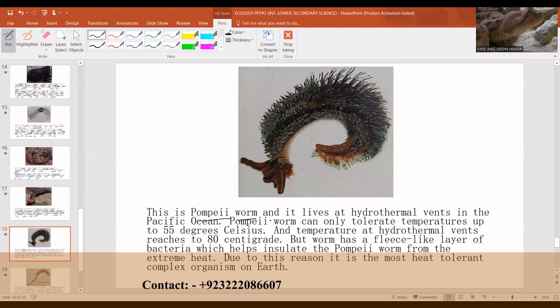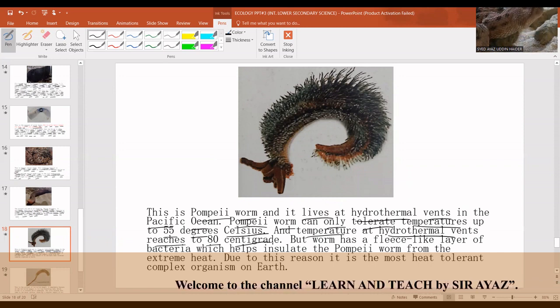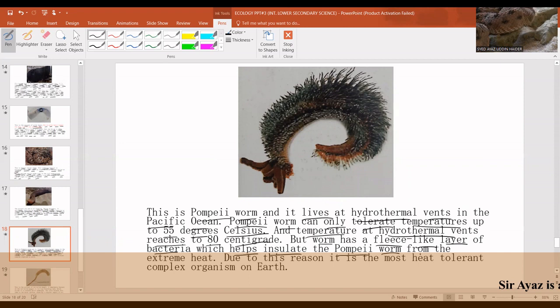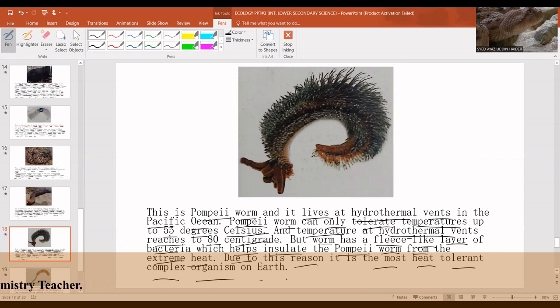This is Pompeii worm and it lives at hydrothermal vents in the Pacific Ocean. Pompeii worm can only tolerate temperatures up to 55 degrees Celsius and temperature at hydrothermal vents reaches 80 degrees Celsius. So how does this Pompeii worm survive at this temperature? Because the worm has a fleece-like layer of bacteria which helps insulate the Pompeii worm from the extreme heat. Due to this reason it is the most heat-tolerant complex organism on earth.